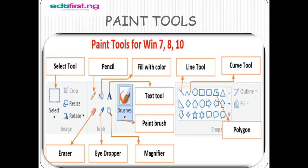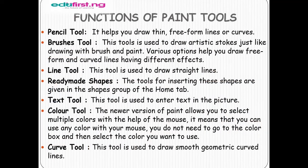In our next slide, we will look at each tool one after the other — that means their functions. The pencil tool helps you to draw thin or free-form lines or curves. The brushes tools are used to draw artistic strokes, just like drawing brushes, and they come in various forms which help you draw free-form and curved lines with different effects. The line tools are used to draw straight lines.